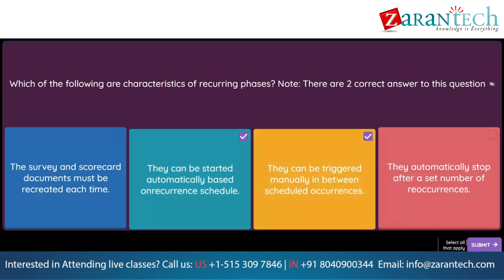Question. When you configure a supplier lifecycle template, which process is used to create the supplier record in the supplier management database? Option 1: Supplier registration. Option 2: Supplier request. Option 3: Supplier qualification. Option 4: Preferred supplier.